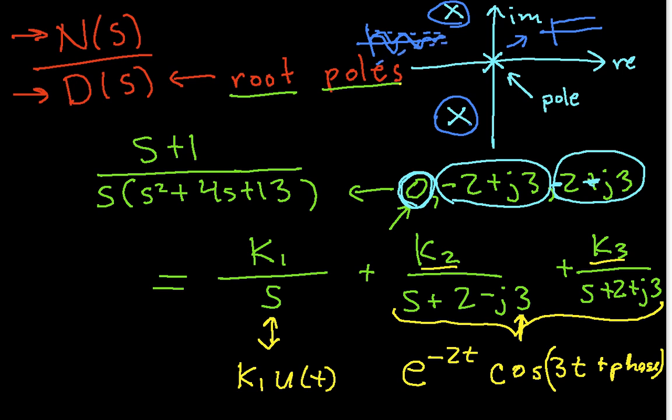The point is that by looking at where the poles are in the complex plane — at the origin, or with a particular real and imaginary part — that tells us quite a bit about the sorts of functions we can expect to see. A pole at the origin corresponds to a unit step function. A pair of poles with a negative real part and an imaginary part of plus or minus 3 corresponds to an exponentially decaying sinusoid. This video has gotten somewhat long, so in the next video we'll generalize what we've discovered about poles and zeros.